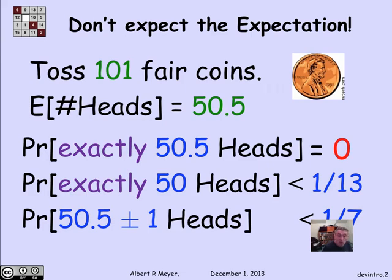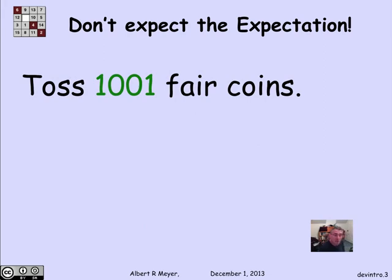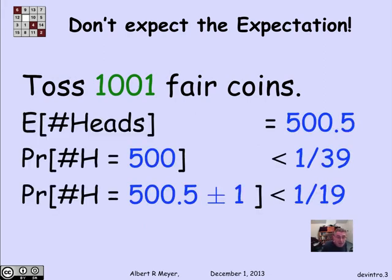OK, let's flip more coins and see what happens. This time, I'm going to flip 1,001 coins. And again, the expected number of heads is 500 and a half, which I'll never get exactly. The probability of getting exactly 500 heads is 1/39th. And the probability of getting within 1 of the expectation, that is either 500 or 501 heads, is about 1/19th.